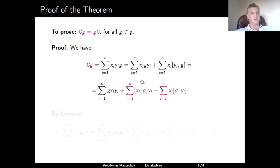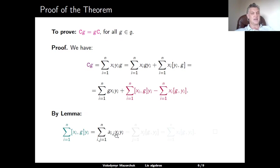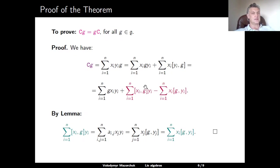We have moved g all the way to the left, and the first summand is g times C. So to prove that CG = GC, we need to show that the second and third summands cancel each other. We compute the second summand: the sum over all i of [x_i, g] times y_i. Writing [x_i, g] as a sum over j of a_{ij} x_j, and using the lemma to replace a_{ij} with b_{ji}, we see this sum can be rewritten as a sum over j of x_j times [g, y_j]. Reindexing from i to j, this equals exactly the third term, so the two terms cancel. This completes the proof of the main theorem.